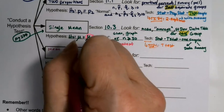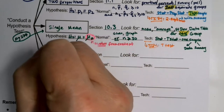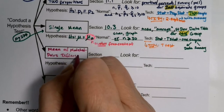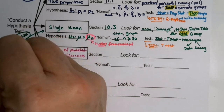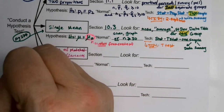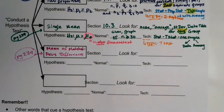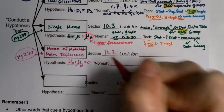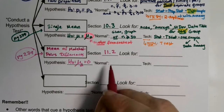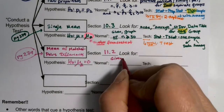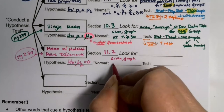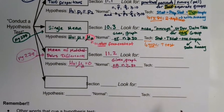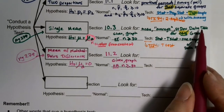This is the mean of the matched pairs differences — the only thing we do with a dependent sample. It's on page 279, around section 11.2. Your hypothesis is that the mean of the differences is zero. The normal condition doesn't change: it's either given a graph or n is greater than or equal to 30. Those conditions are the same. The trick is that you're going to be given a data table with differences.